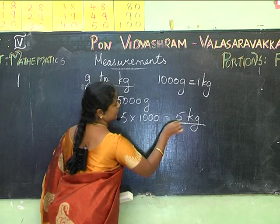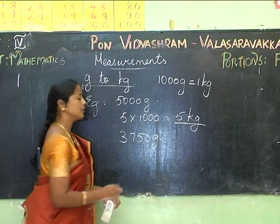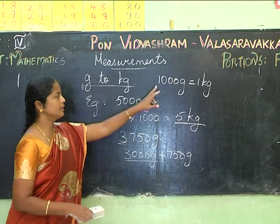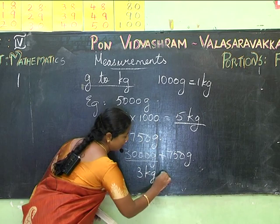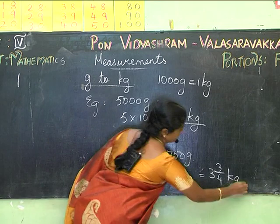What is 3750 grams in kg? I can write it as 3000 grams plus 750 grams. I know that 1000 grams equals 1 kg, so 3000 grams is 3 kg, and 750 grams is ¾ kg. So the total is 3¾ kg.